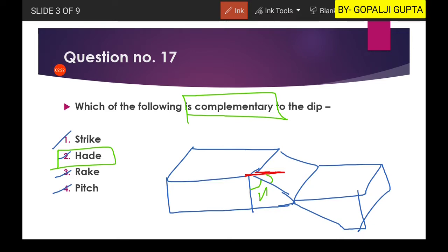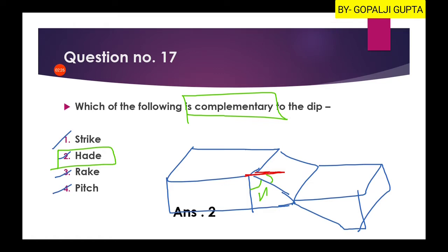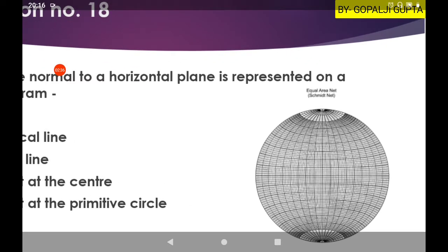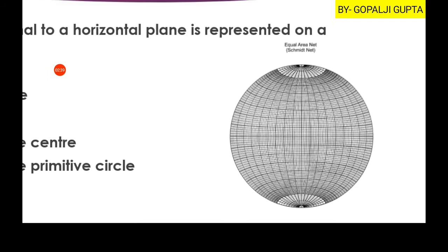So here second option will be our right answer. Now next question is how is the normal to a horizontal plane represented on a stereogram?